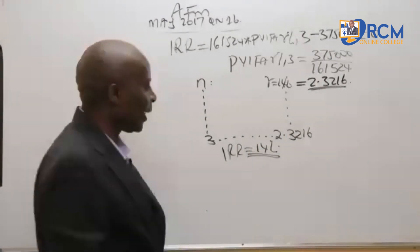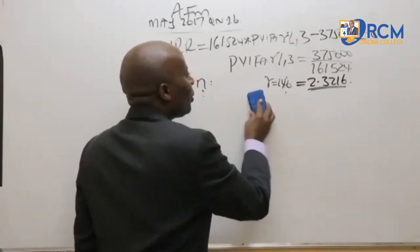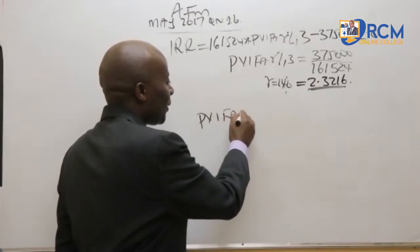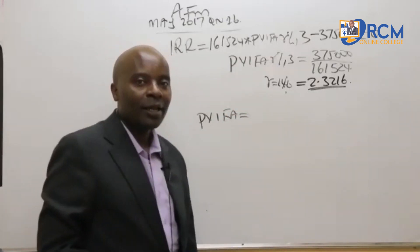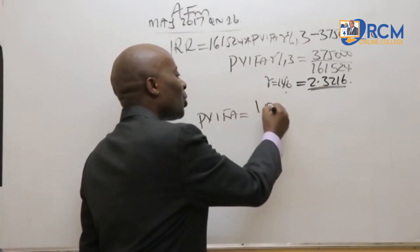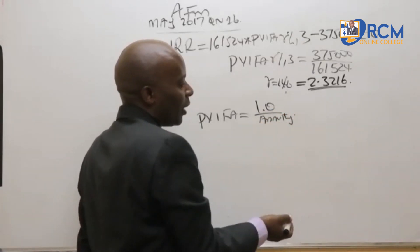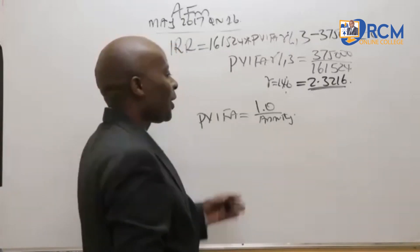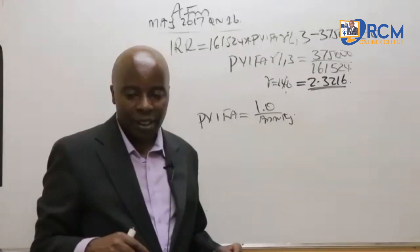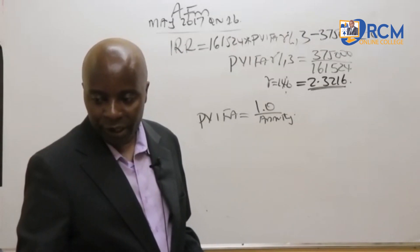Remember there is that shortcut of ours of getting this PVIFA directly. Well, it's not very good for us to work with shortcuts where you take the PVIFA whenever they want you to give them IRR over an annuity cash flow project. You take the PVIFA to be equal to the initial outlay over the annuity cash flow. And then whatever you get there, you locate that figure in your tables and then you would be able to read the rate of return up there.